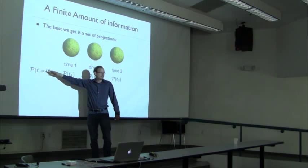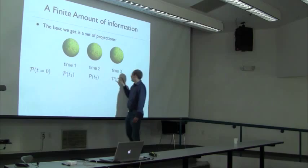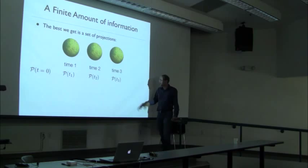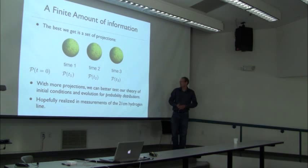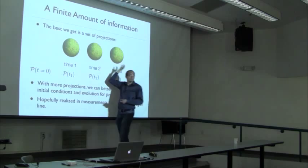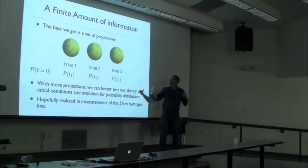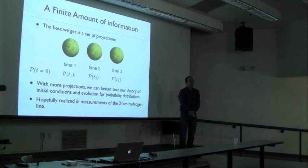The best we can do — designing the best experiments in our lifetimes while staying on Earth — is to get a set of projections at different times. They're correlated but not directly the same; the lumps and bumps at different epochs don't correspond one-to-one. With more projections we can do better at testing our theory of initial conditions and evolution. For each independent projection I now have, say, 5 modes for L=2, so I can better characterize the probability distribution.